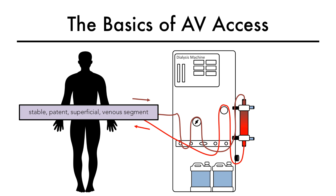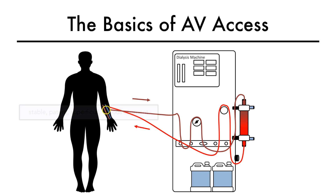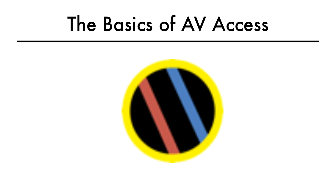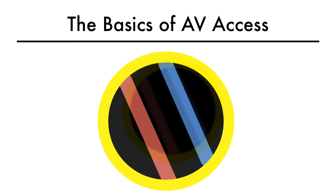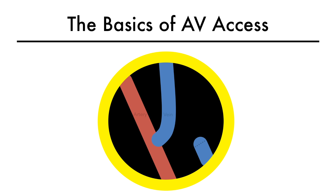An AV axis can be either a fistula or a graft. An AV fistula is where the patient's artery is connected directly with the patient's vein in an end-to-end, side-to-side, or an end-to-side anastomosis, the latter being more common and demonstrated here. What is shown is an end-to-side anastomosis between the radial artery and the cephalic vein to create a radiocephalic fistula.